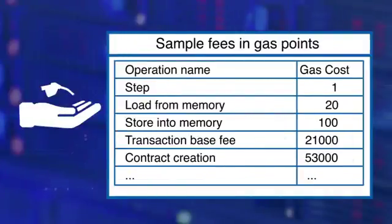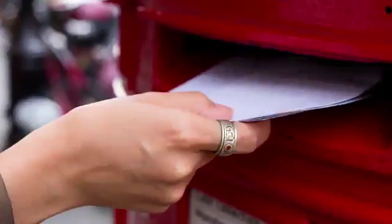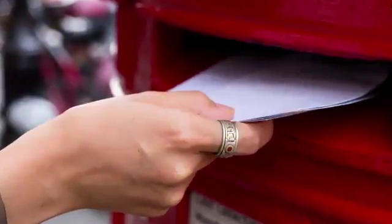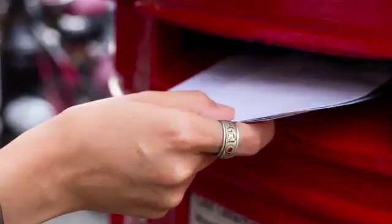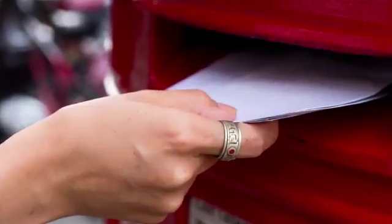Ethereum has specified gas points for each type of operation. The mining process computes gas points required for execution of a transaction. If the fees specified in gas points in the transaction are not sufficient, it is rejected. This is similar to mailing a letter with insufficient postage — the letter will not be delivered if it had insufficient postage.